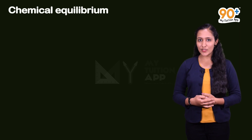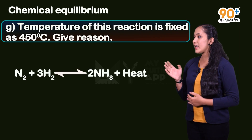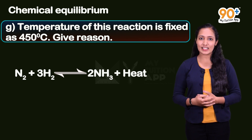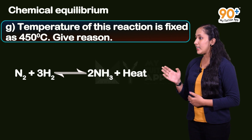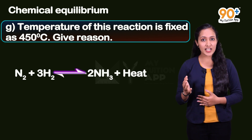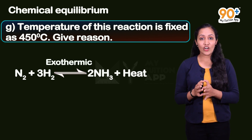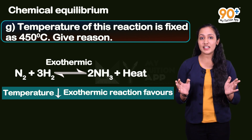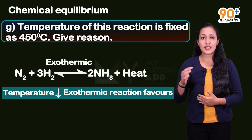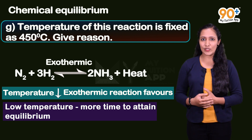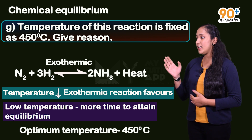Temperature of this reaction is fixed as 450 degree Celsius - give the reason. From the reaction we can conclude that the forward reaction releases heat, meaning the forward reaction is exothermic. We already learned that when temperature decreases, the exothermic reaction is favored. However, if temperature is very low, the system takes more time to attain equilibrium. So the optimum temperature of 450 degree Celsius is used to conduct this reaction.